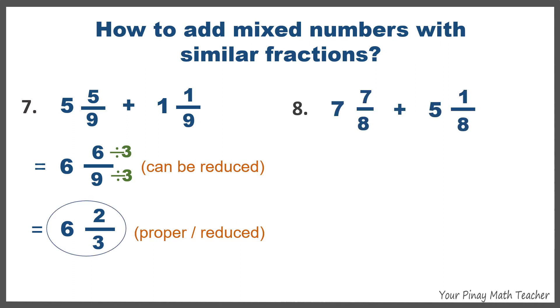Number eight, 7 and 7 eighths plus 5 and 1 eighths. Add 7 and 5, so we get 12. 7 eighths plus 1 eighth is 8 eighths. And we know that this can still be simplified. So, bring down 12, and then do not copy 8 eighths anymore. Instead, you replace it with 1 whole. So, adding 12 and 1, we get a final answer of 13.